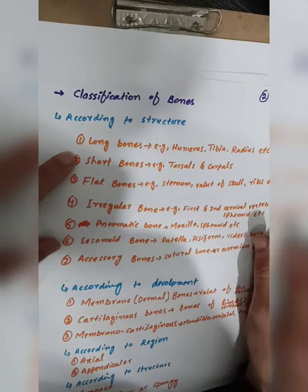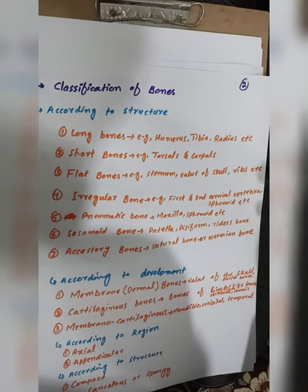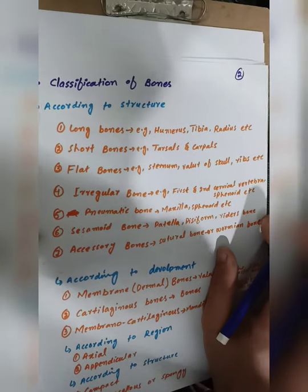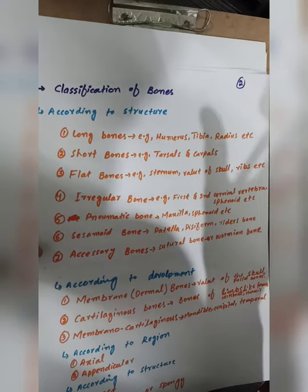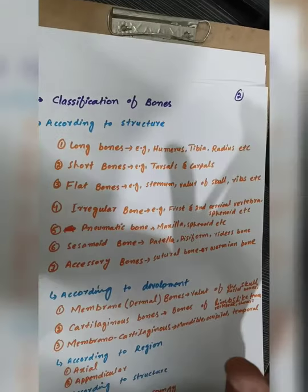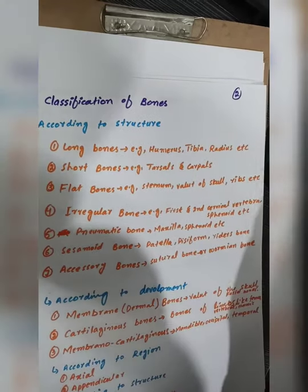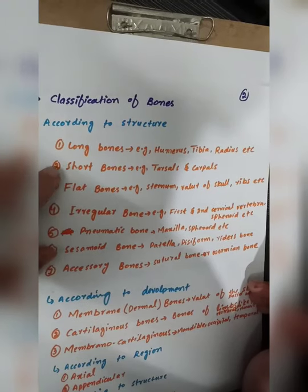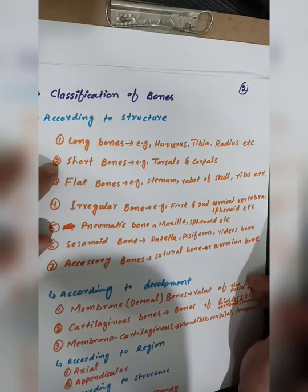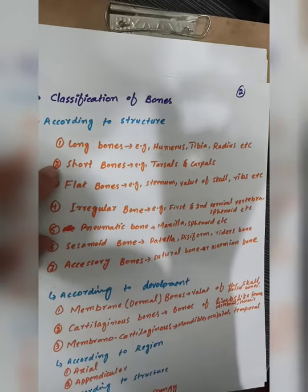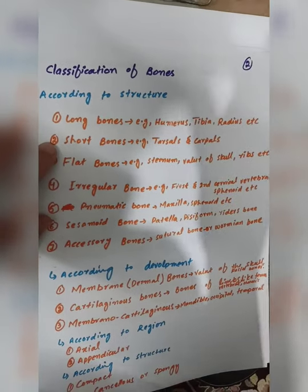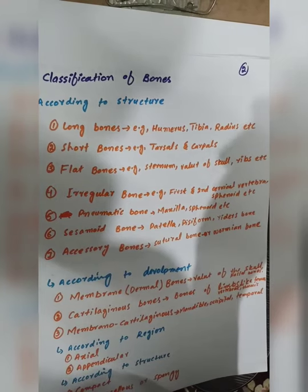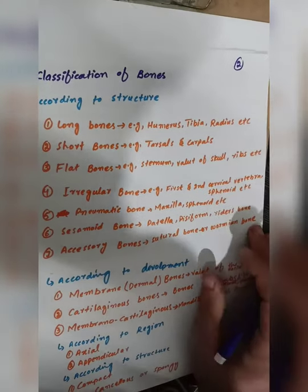Long bones are elongated and oriented horizontally. Examples include the femur, tibia, and radius. Short bones have a cube-like structure. Simple examples of short bones include the carpal bones of the wrist and the tarsal bones.